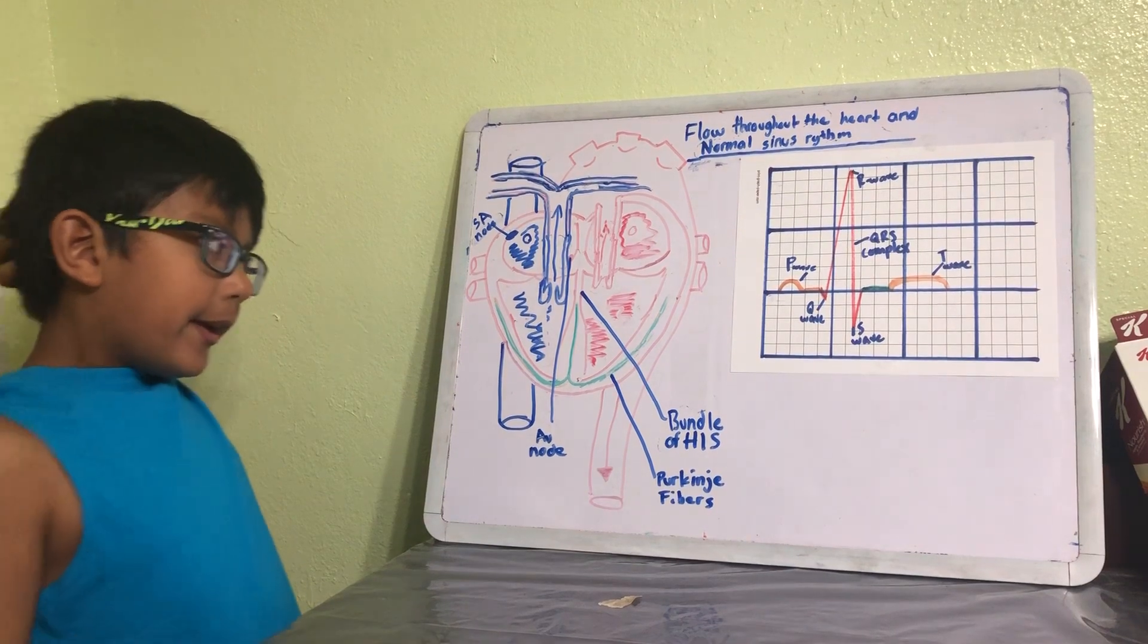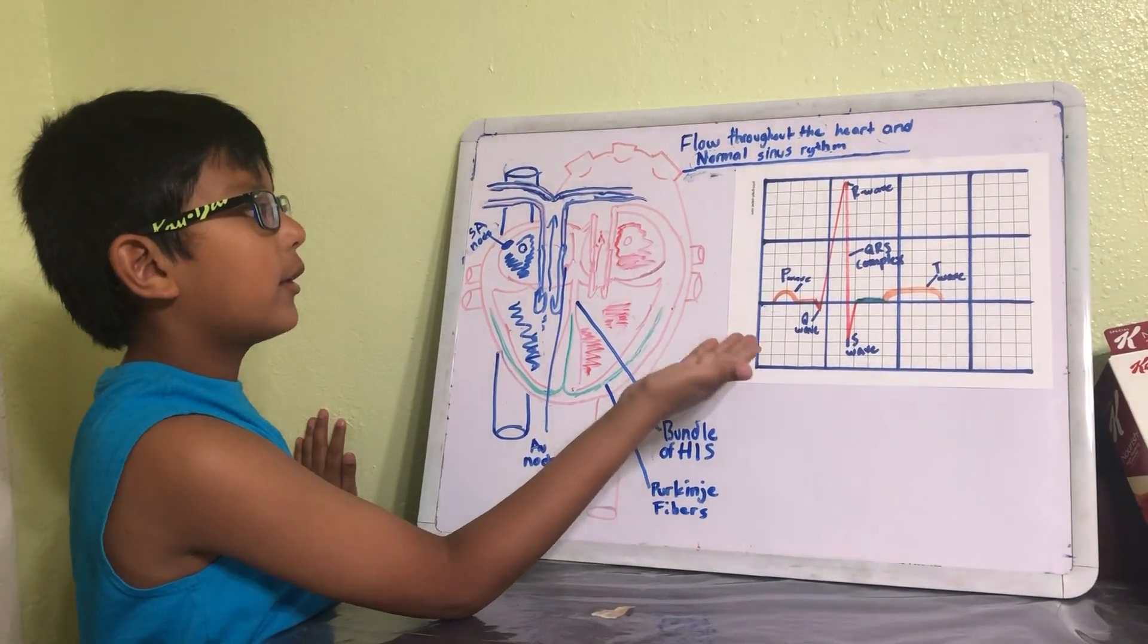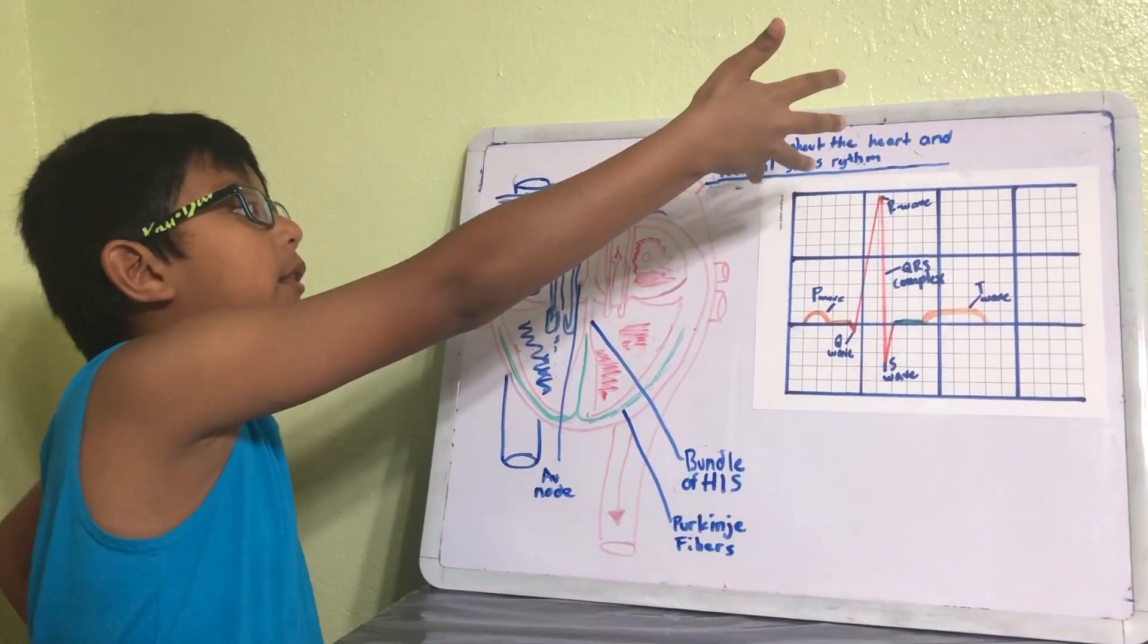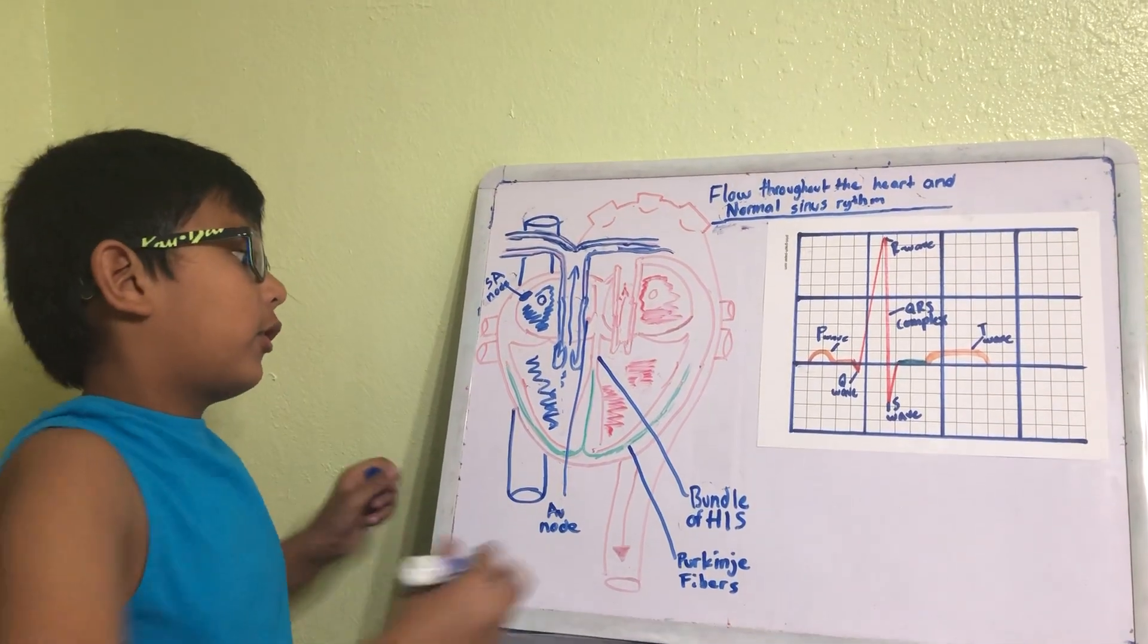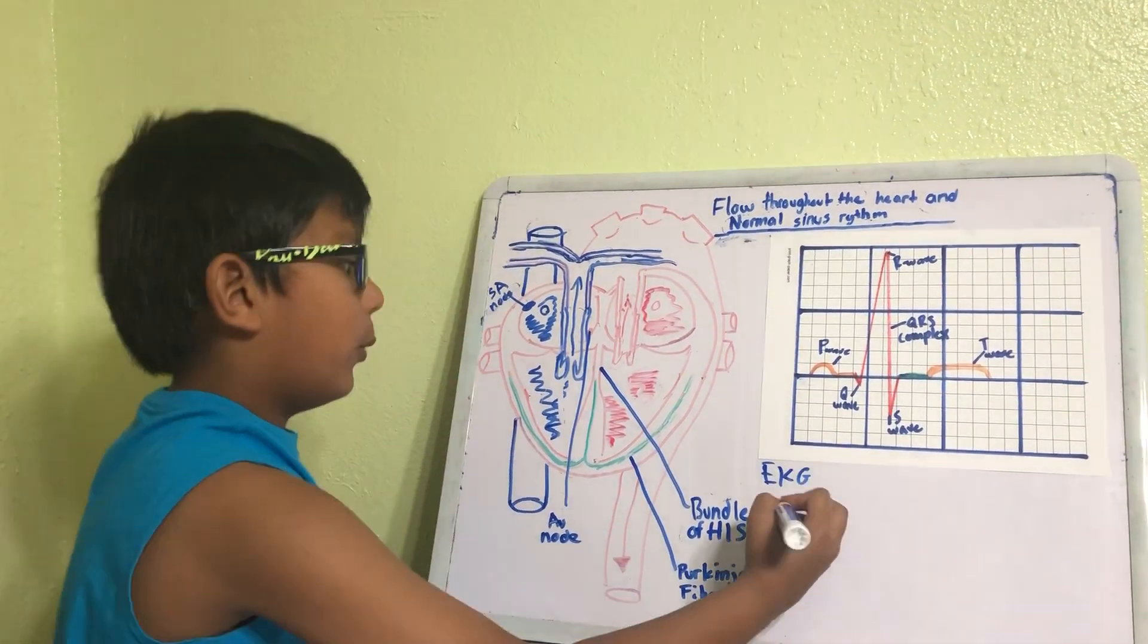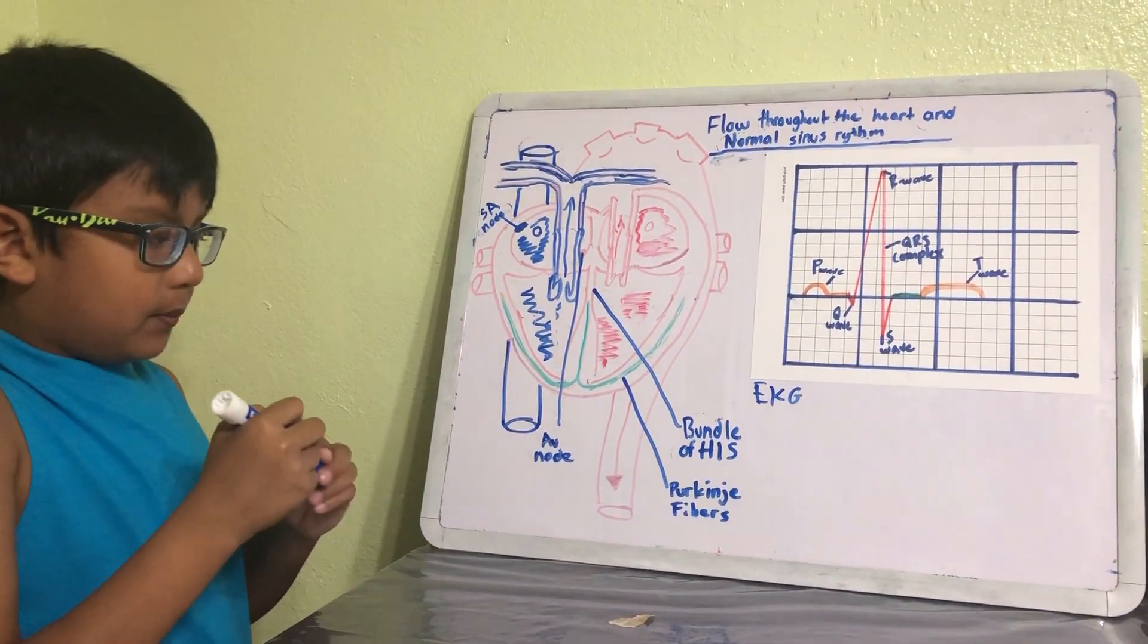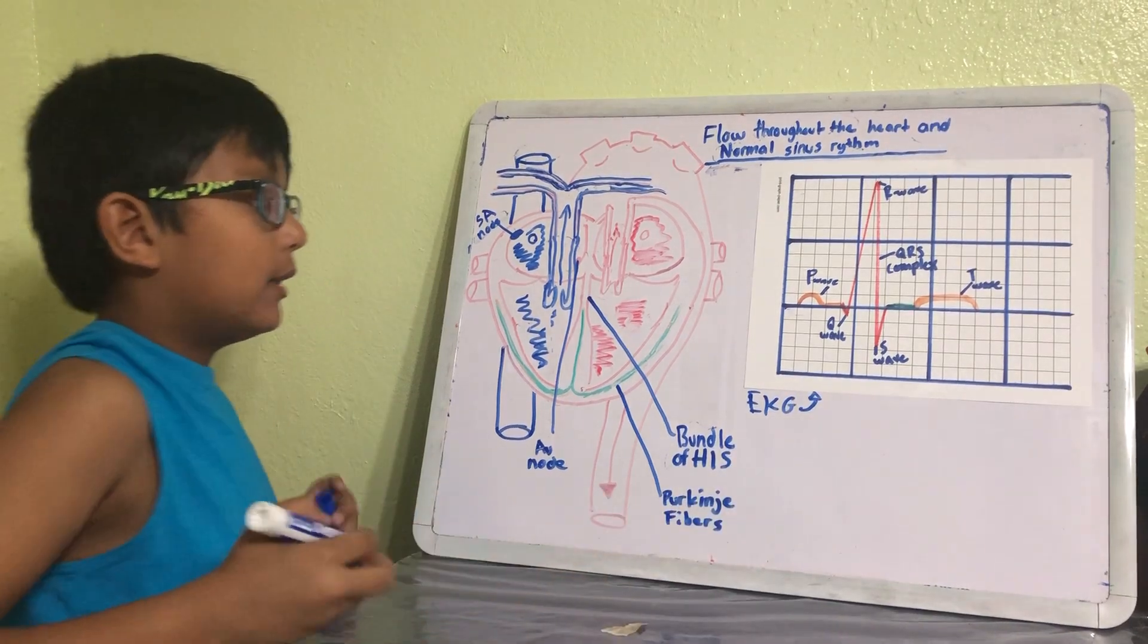So here we have a diagram of a normal sinus rhythm. This is the rhythm you would normally see on an EKG, which is basically a machine that measures the difference in electrical charge between the electrical system in the heart.